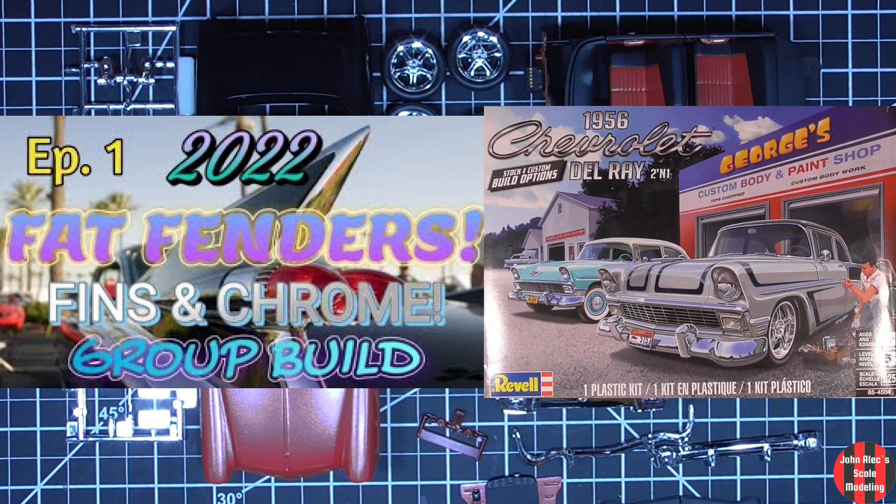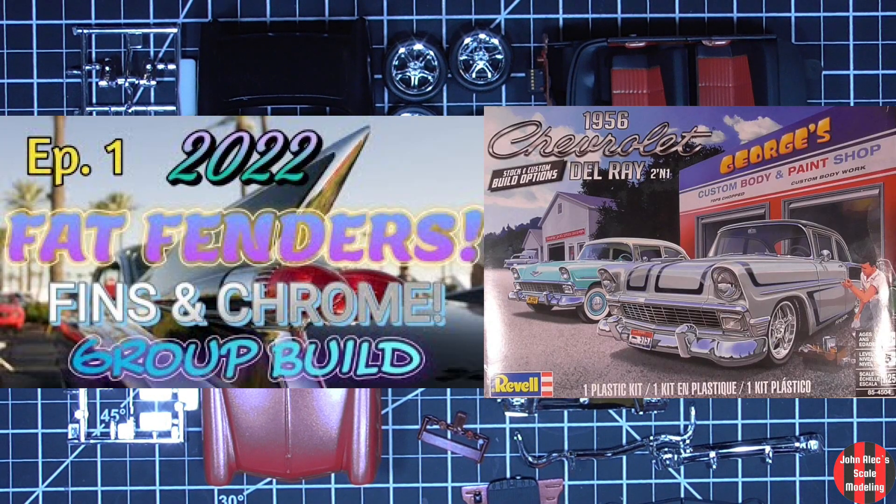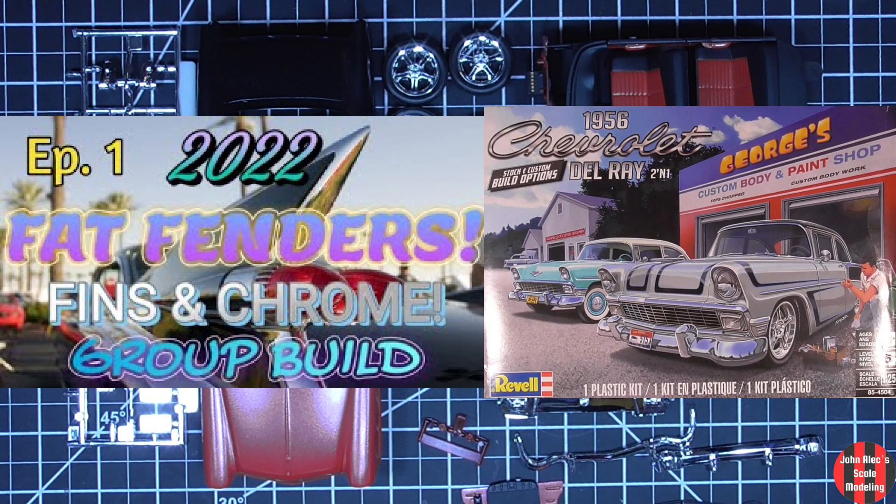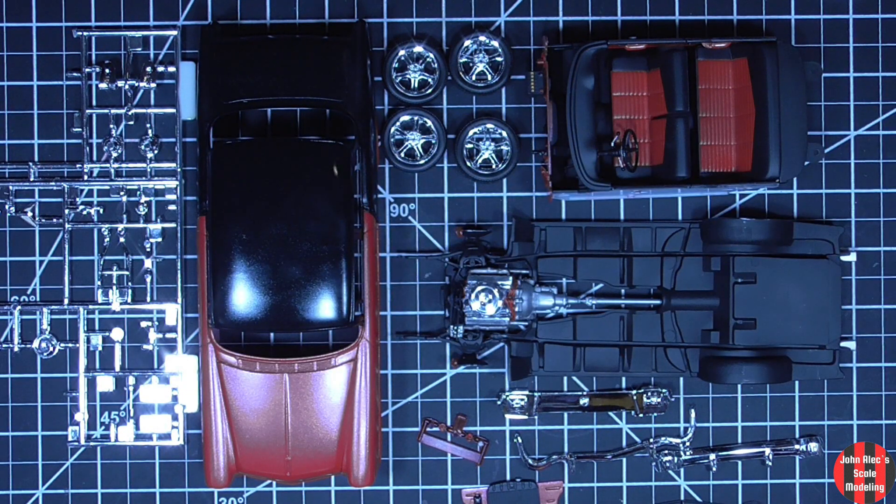The Fat Fenders, Finns, and Chrome group build, hosted by Rob at Time Machine Scale Models. I'm doing the Revell 56 Delray. Rob is a great guy. Please go check his channel out. This group build ends in three weeks.